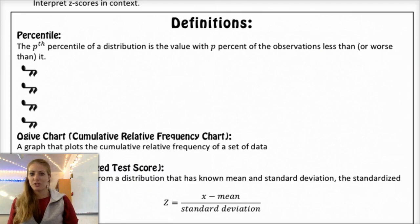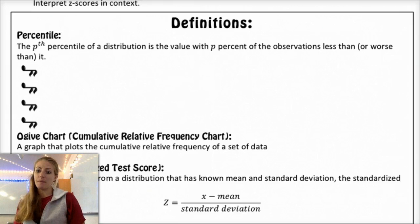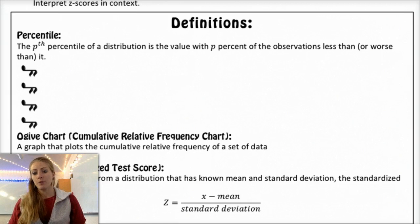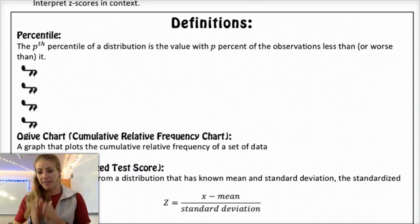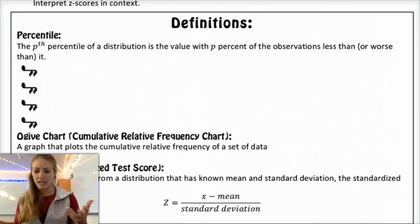If you're in the 20th percentile for ACT scores, that's a little rough because only 20% of people who have taken the ACT have done worse than you, which means 80% of people did better than you. So hopefully you've heard that term used before. It's basically at that value, you have a percent of observations that are below that value or worse than that value.